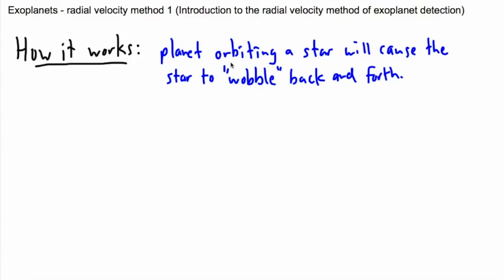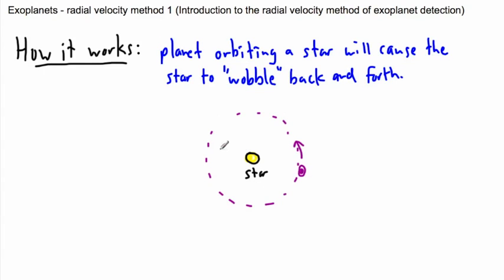Because of that, we look at the light from the star. Here on Earth we're looking at the light from the star, and at some points the star is going to appear to be coming towards us and sometimes it's going to seem to be going away from us. So what we can do is take the spectrum of the star.